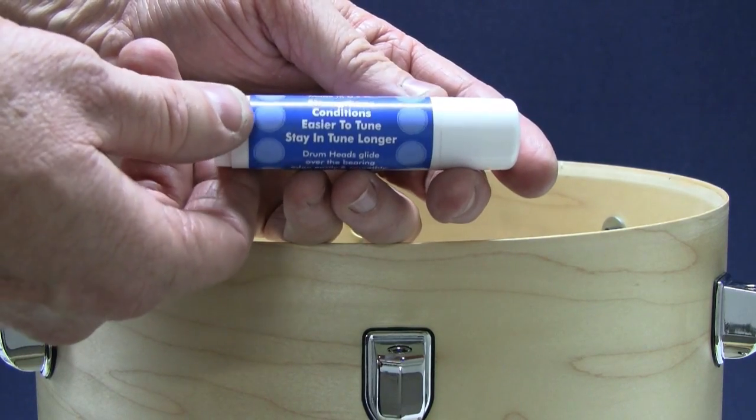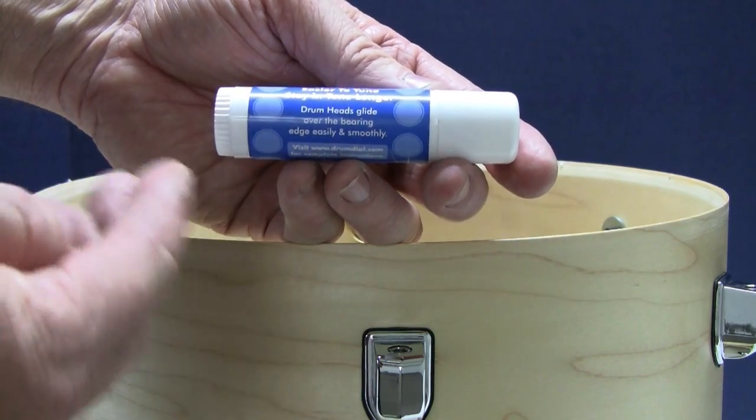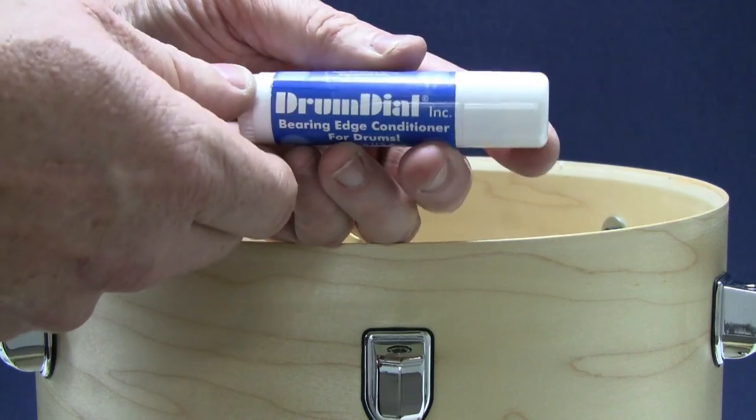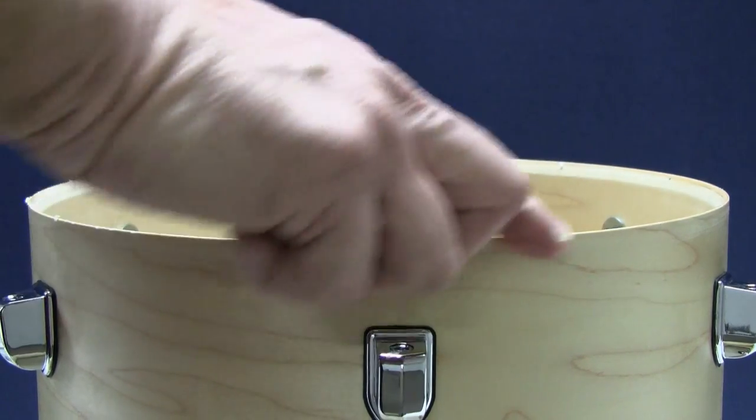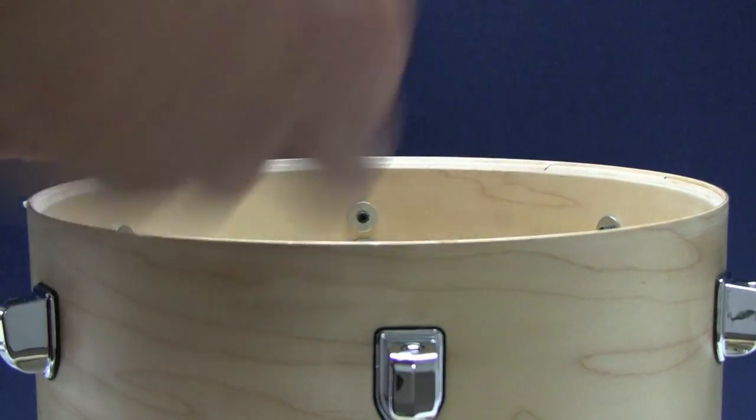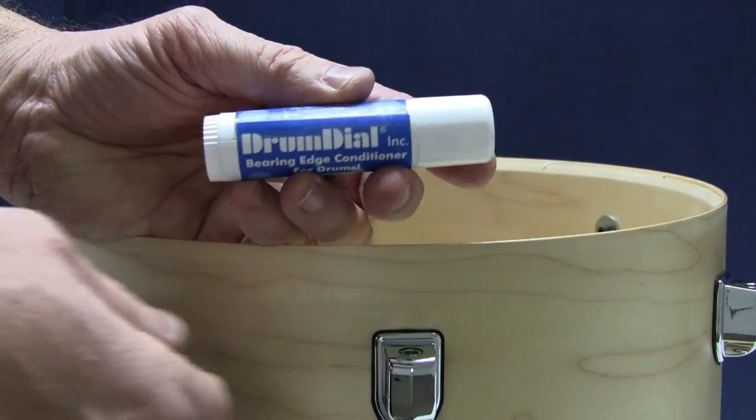This conditioner is not a wax, soap or petroleum. Those products deaden the drum head and harsh chemicals are very bad for the bearing edge. Our special blend of extreme high pressure lubricants and conditioners are non-toxic and won't harm wood, plastic or metals. DrumDial designed this product specifically for drums.